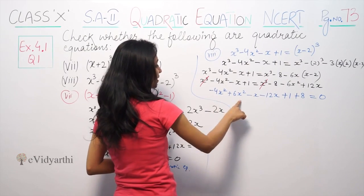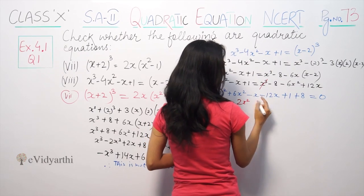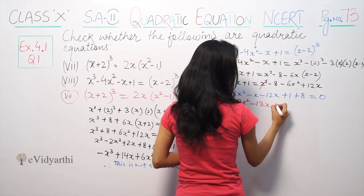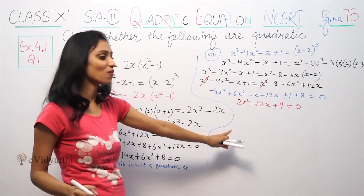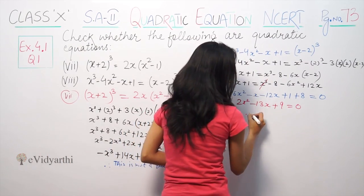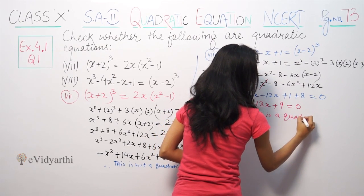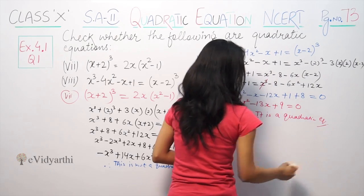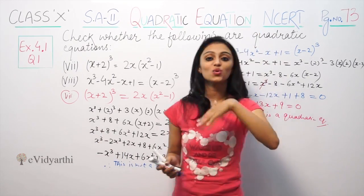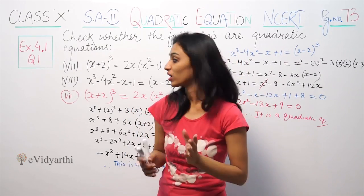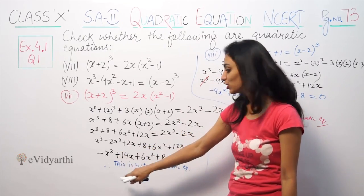So this equation becomes 2x²-13x+9 is equal to 0. So the highest degree is 2. Therefore it is a quadratic equation. For an equation to be quadratic, the highest degree of the variable should be 2. If it has something more like cubic, then it's a cubic equation, not quadratic.